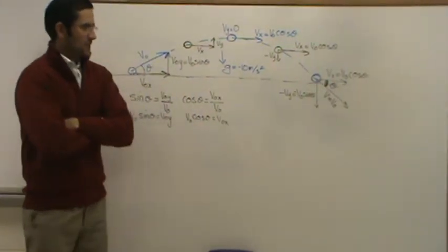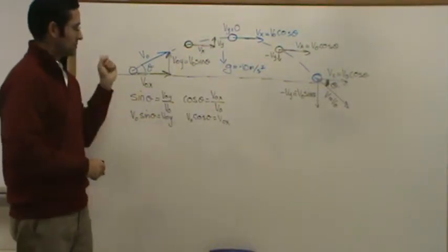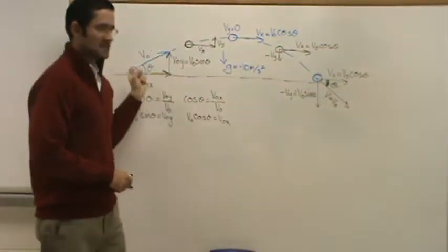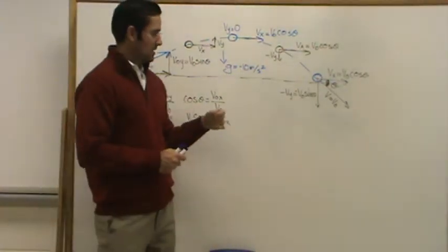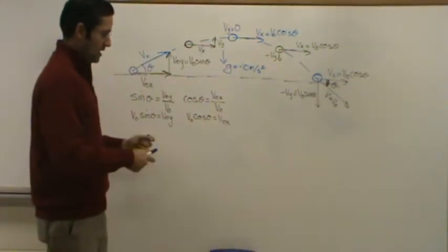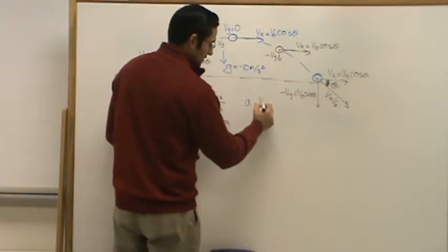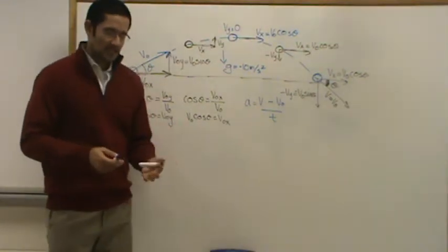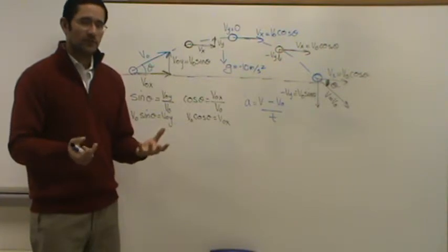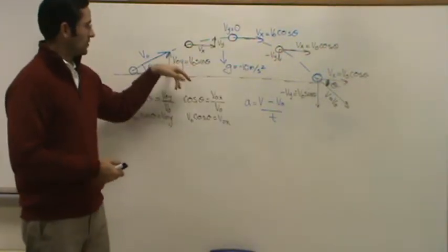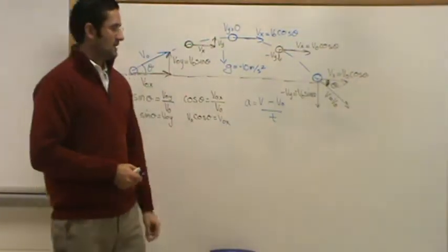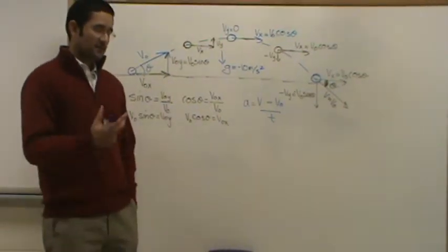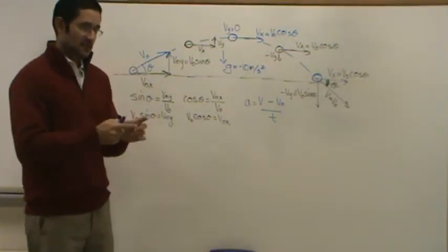There are a couple of things you will be asked to find. First: how much time does the ball spend in the air? That means comparing the start point to the end point. One of your equations is: acceleration equals final velocity minus initial velocity over time. You want to use variables from the axis that gives you more information. The y-axis gives us the acceleration of gravity, the initial velocity, and the final velocity, so I'm going to use variables from the y-axis.